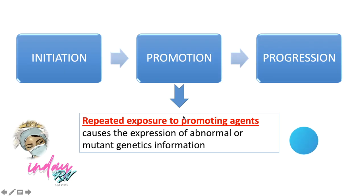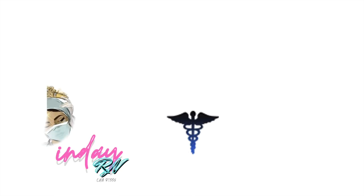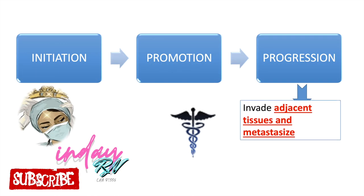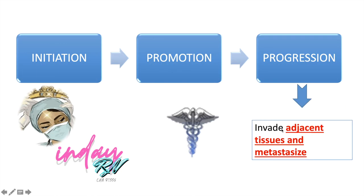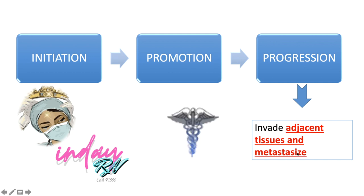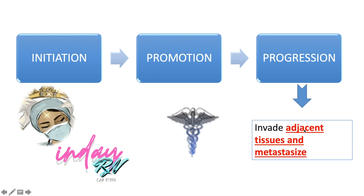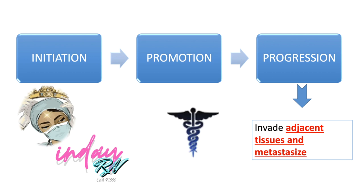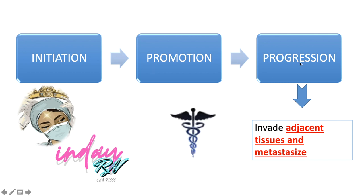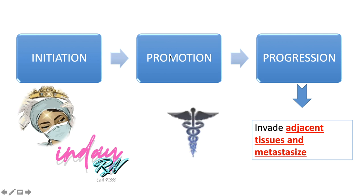The next one is progression. Here in the progression phase, there is actual invasion — the cancer cells invade adjacent tissues and there is already metastasis. There is too much cell growth requiring additional mutation, so the growth rate increases, allowing the cancer to metastasize and spread throughout the body. The cancer becomes resistant to therapy. These three stages show the development of cancer, and we call it carcinogenesis.